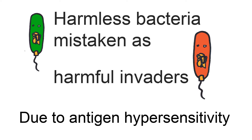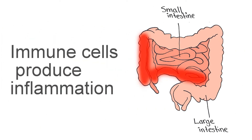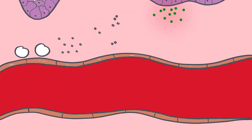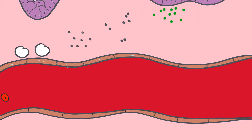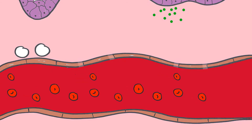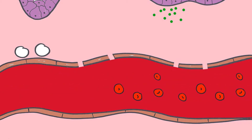This initiates the immune system. Immune cells travel out of the blood to the intestine and produce inflammation. In this process, chemicals such as histamines, bradykinins, and prostaglandins are released. This leads to increased capillary permeability and blood flow to the area of harm, which causes swelling and the narrowing of the blood vessels.